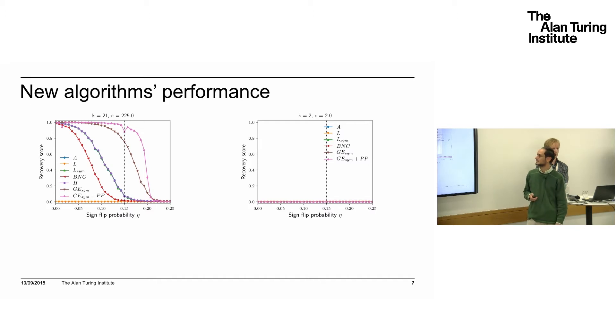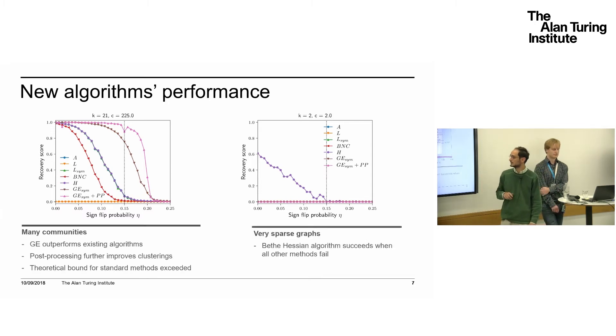For the very sparse case, the generalized eigenvalue formulation doesn't do as well as the others—it doesn't learn anything, and post-processing doesn't help because K equals 2, and it's really the same as A. On the other side, the signed version of the Bethe Hessian is able to detect communities up to the theoretical threshold, which is quite impressive because all other methods fail. Summarizing, the GE is particularly suited for cases where the graph is not too sparse but we have many communities, while the Bethe Hessian outperforms all other methods and actually reaches the theoretical threshold where standard methods of Laplacian and adjacency fail.